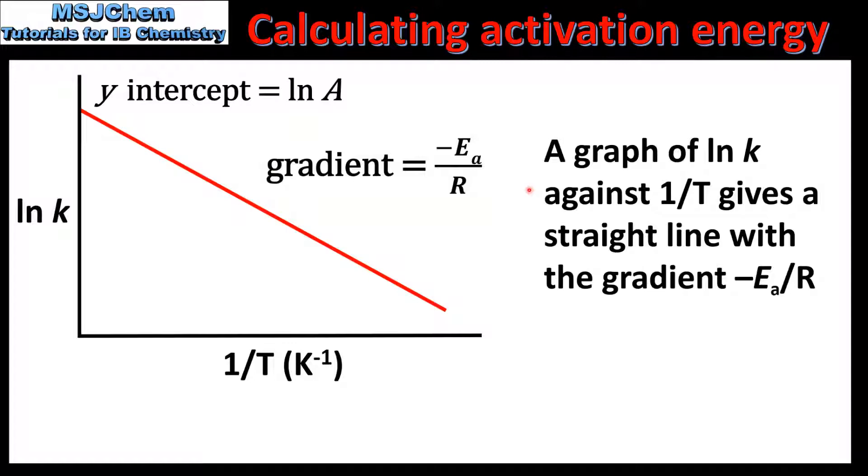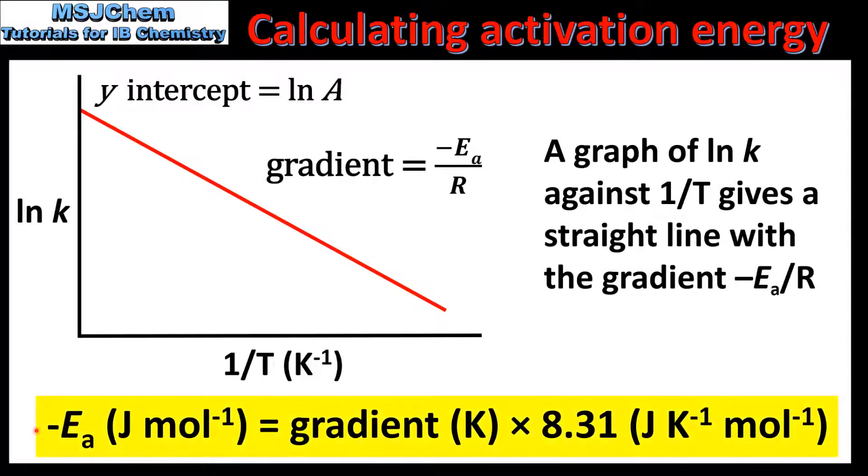So to summarize, a graph of the natural log of K against 1 over T gives a straight line with the gradient negative E_a over R. We then use this equation to calculate the activation energy, which is negative E_a is equal to the gradient multiplied by the gas constant.